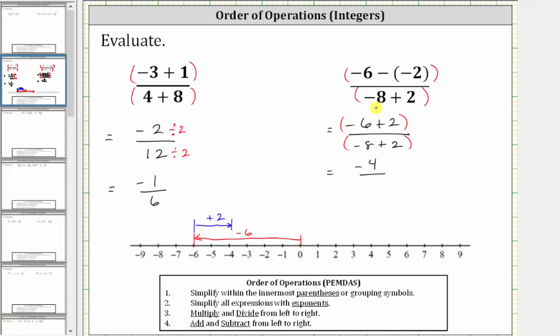In the denominator, we have negative eight plus two, which is equal to negative six. And again, if needed, we could model this sum on the number line.